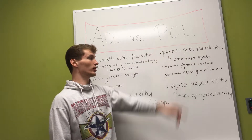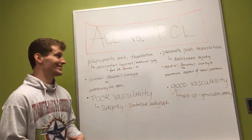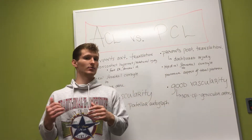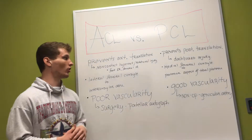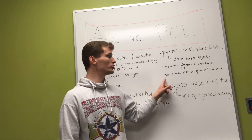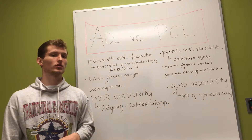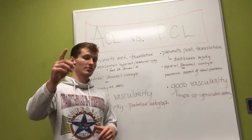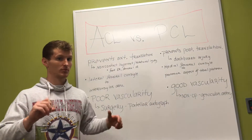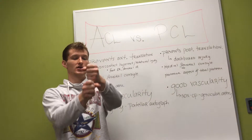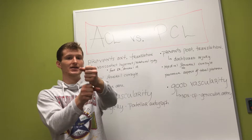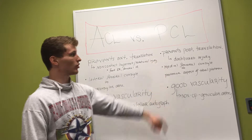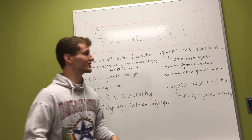The PCL, the posterior cruciate ligament, is the exact opposite. It goes from the medial femoral condyle — the medial side of our femur, our thigh bone — to the posterior aspect of the tibial plateau. So it goes from forward on the thigh bone to the back of the shin bone. It's going to prevent us from translating that tibia backwards on the femur — it prevents posterior translation.